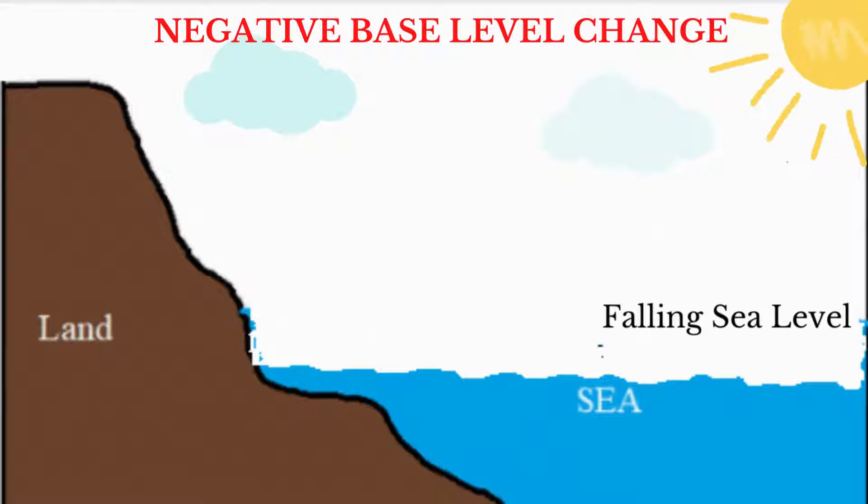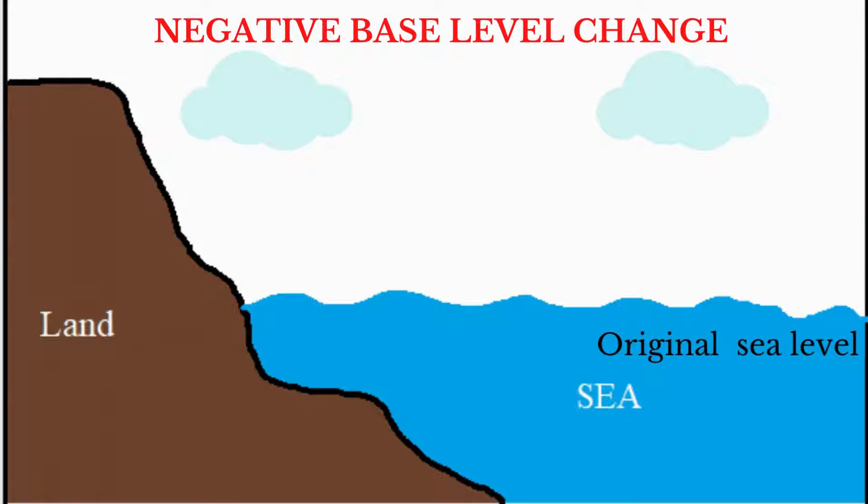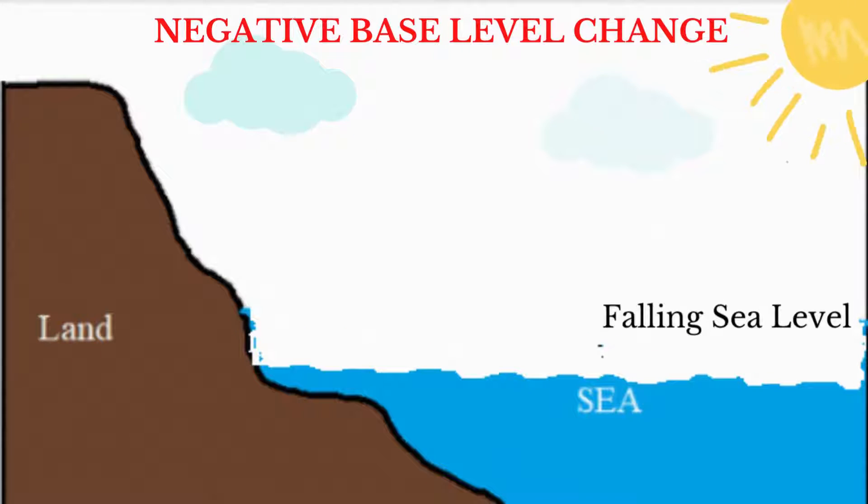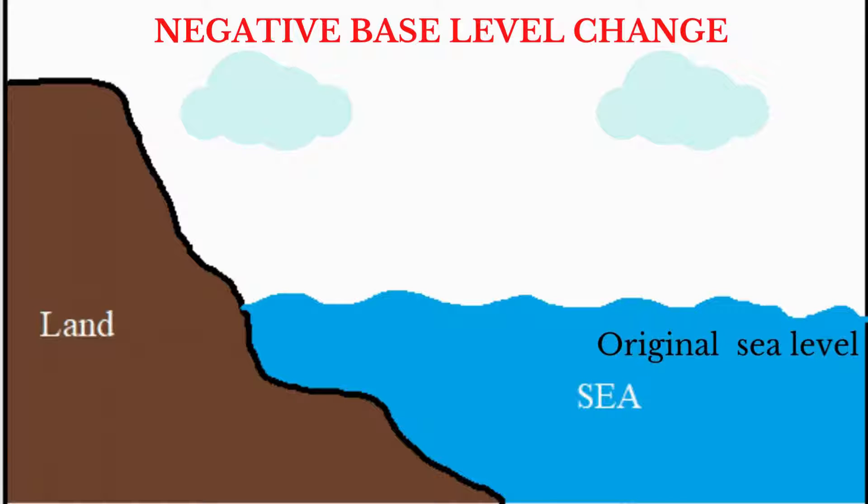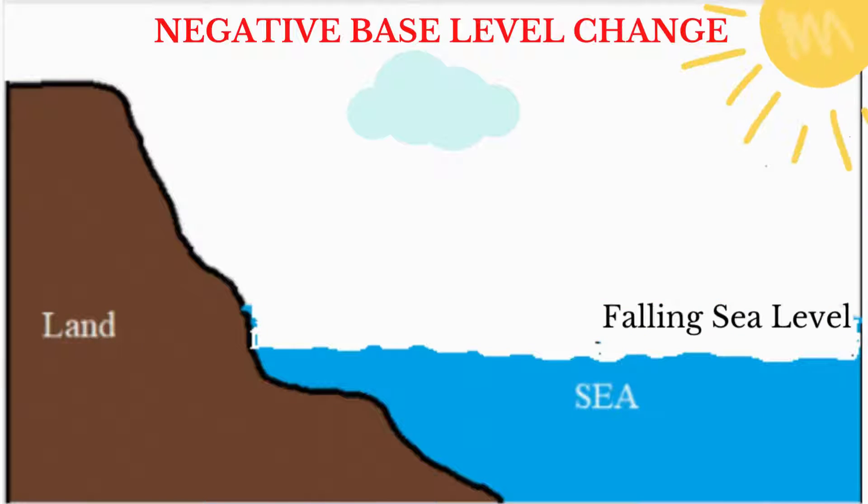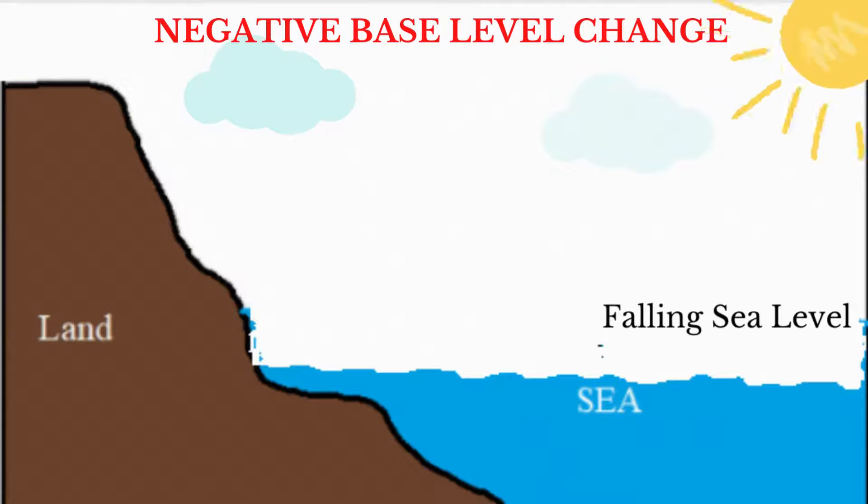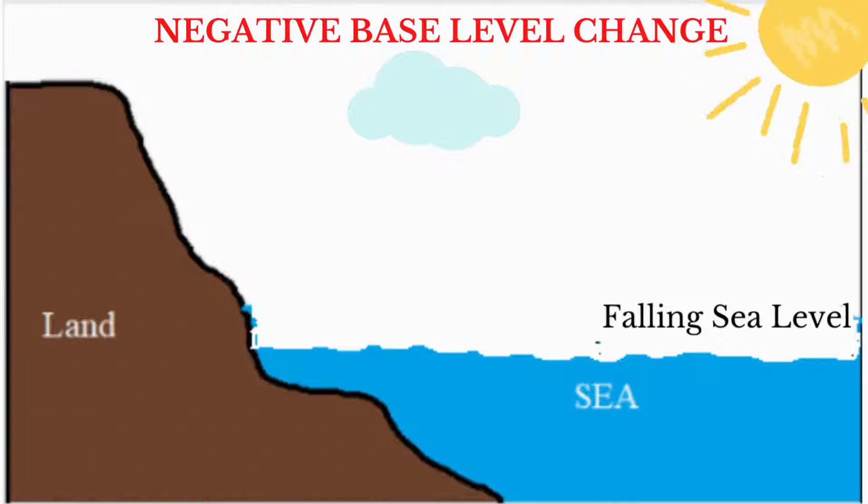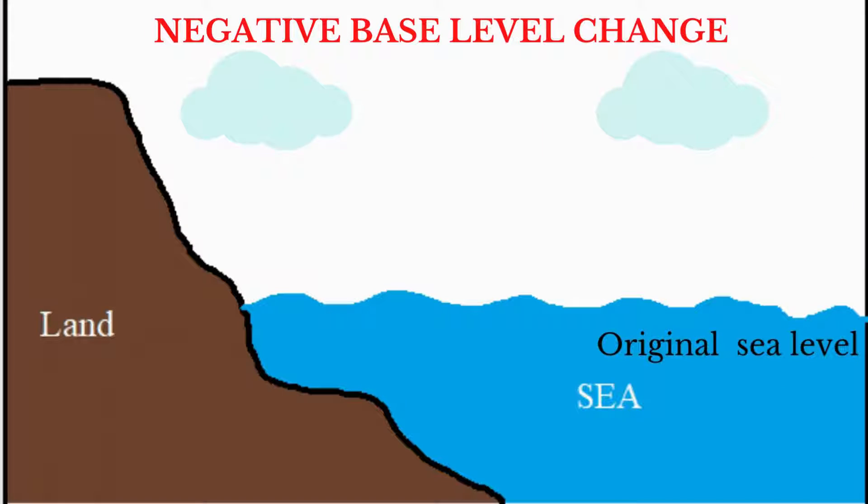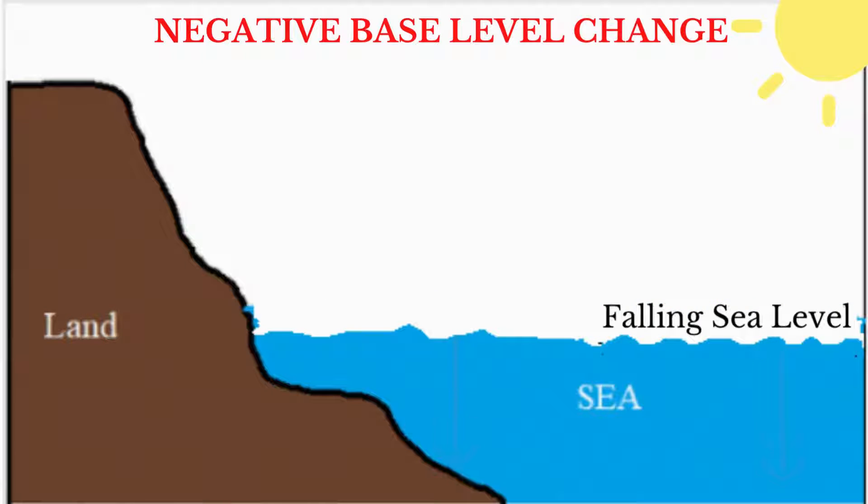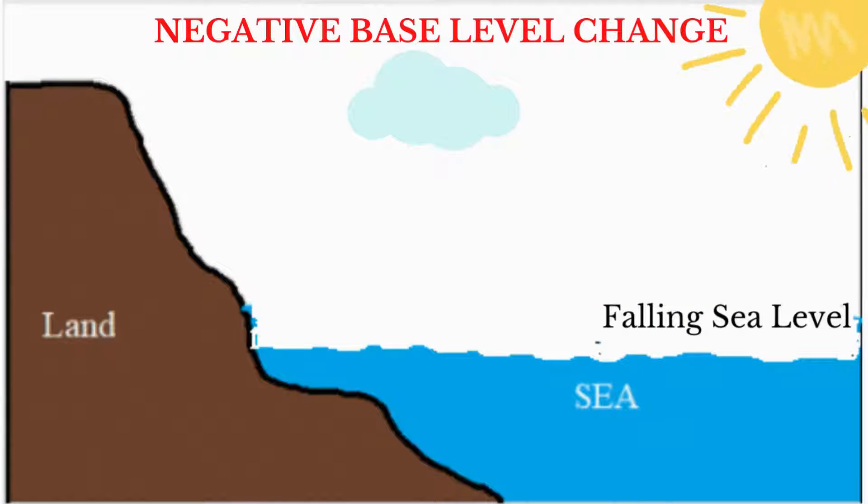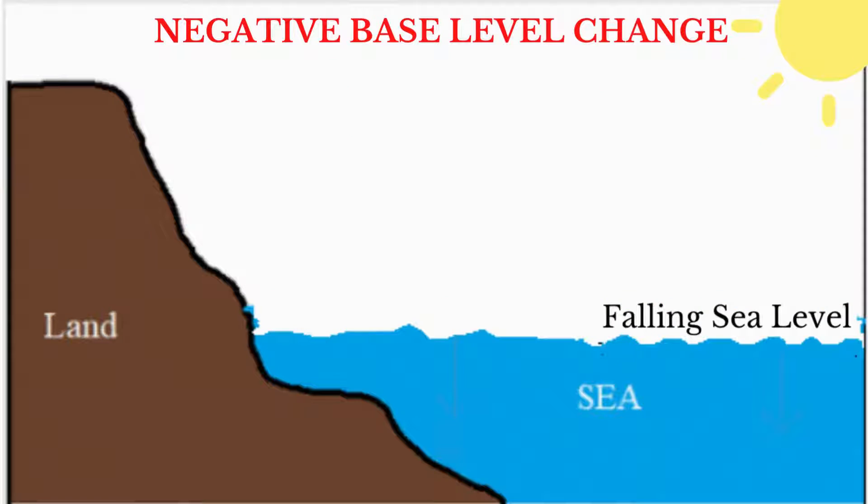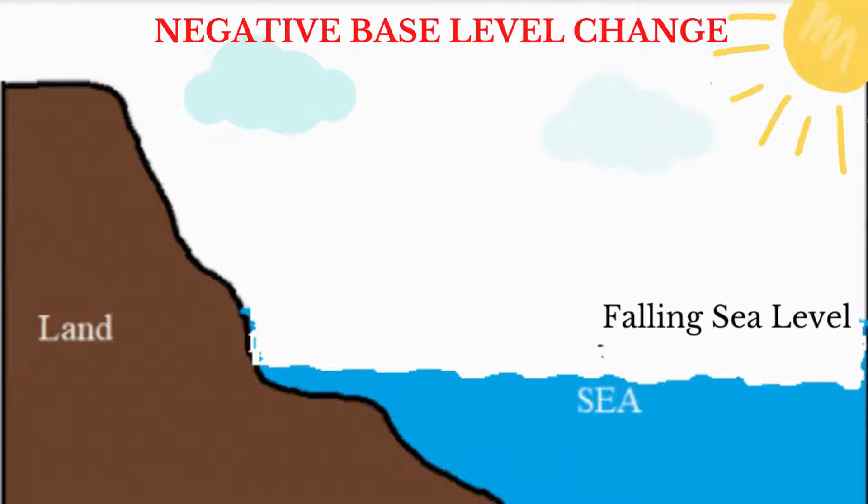Negative base level change occurs when sea level falls in relation to the land or the land rises in relation to the sea. This causes the land to emerge from the sea, steepening the gradient of the river and increasing the rate of fluvial erosion. This process results in river rejuvenation.